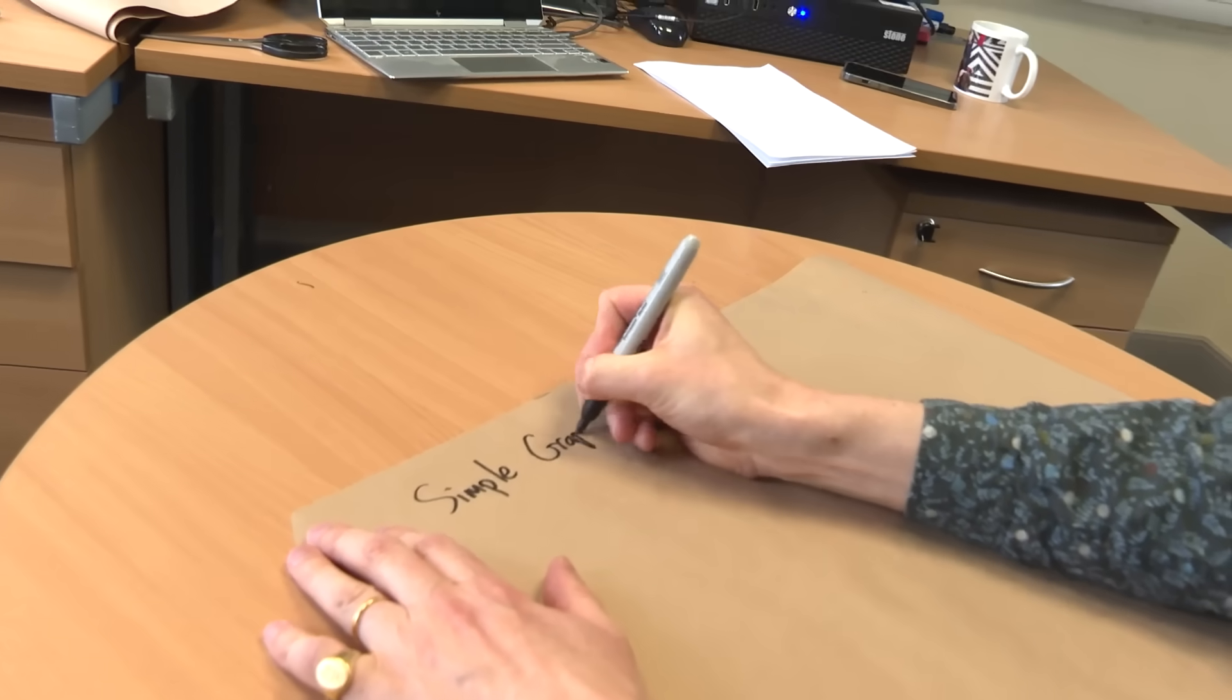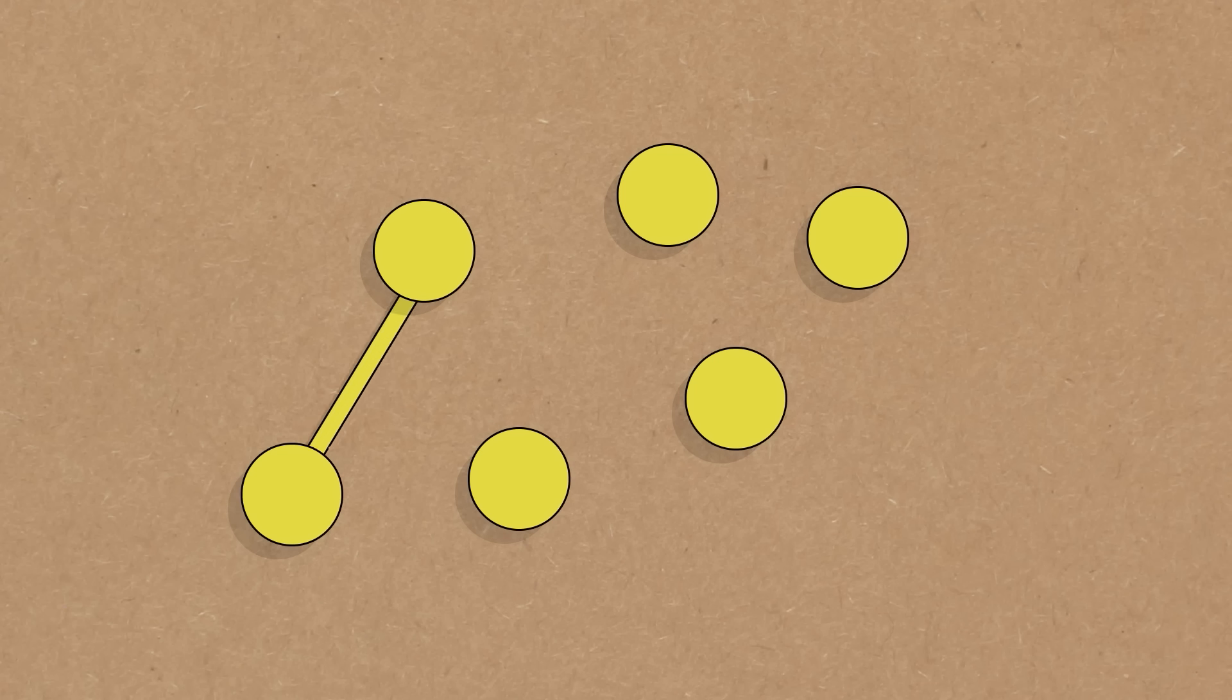First, I'll explain what a simple graph is. And it's a pretty simple thing. It's just a bunch of dots we call nodes. And then some of them might be joined to each other by lines we call edges. Some might not. Something like that.